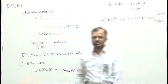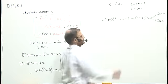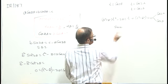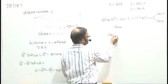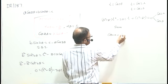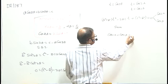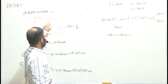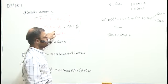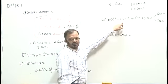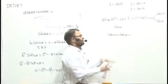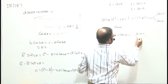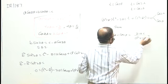I can write the sum of the roots: cos2α plus cos2β. According to the formula I have written, this is minus b by a applied here, which becomes 2ac upon (a² + b²).